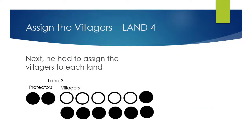Next is land 4. Here we have the protectors of 1 and 1. We identify our villagers starting at binary 000001 and going up to 1111111.